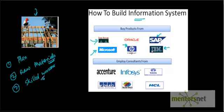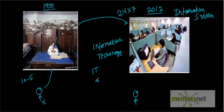Then you need to find skilled workers who can combine all those things together and build the information management system. That is where companies like Infosys, Data Consultancy, HCL, and Wipro come into the picture. So this is how you are going to build an information management system, and that is how you transform an office of the 1950s to an office of 2012.